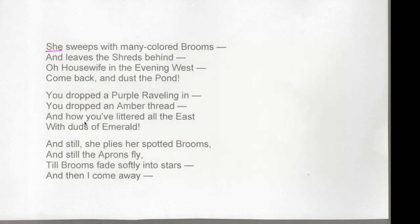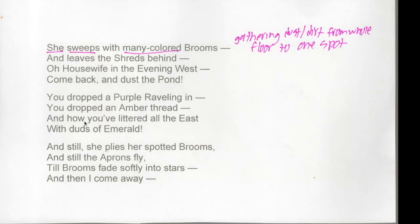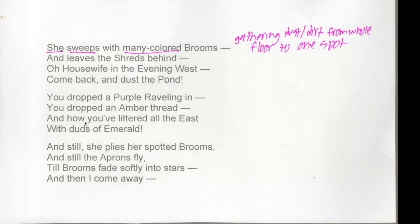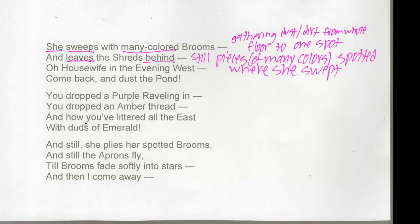First I noticed there's a 'she' involved — I don't know who she is, it's not first person, though at the end it does shift to first person. So I drew a 'she.' She sweeps with many-colored brooms, which makes me think of someone sweeping up a bunch of dust — like if somebody knocked over a hole puncher in my class, there'd be all these colored dots on the floor and I'd sweep them into one pile. She leaves the shreds behind, meaning there are still pieces of color scattered around where she already swept — she didn't get everything.